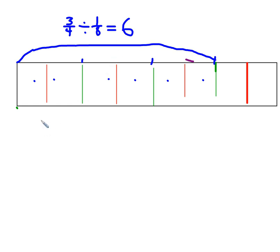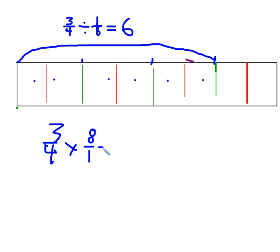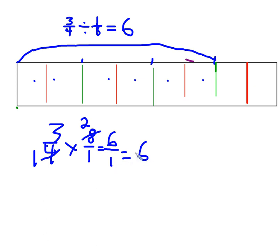Let's look at this mathematically. 3/4 divided by 1/8 is a bit of a challenge, but multiplying fractions is no big problem. The inverse of 3/4 divided by 1/8 is 3/4 times 8/1. Simplify before multiplying: 4 and 8 are both divisible by 4 — 4÷4=1, 8÷4=2. Then 3×2=6 over 1×1=1, which is 6. That's the algorithm.